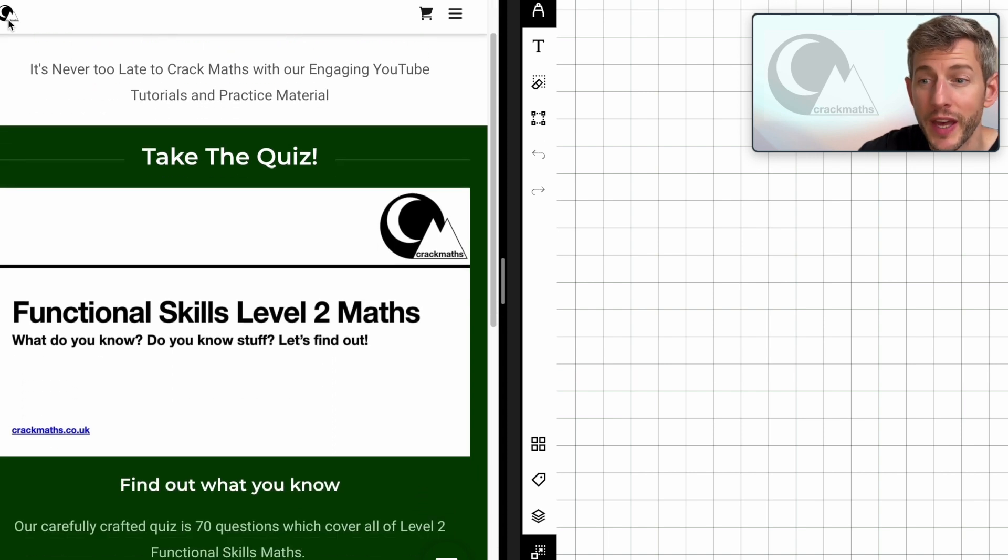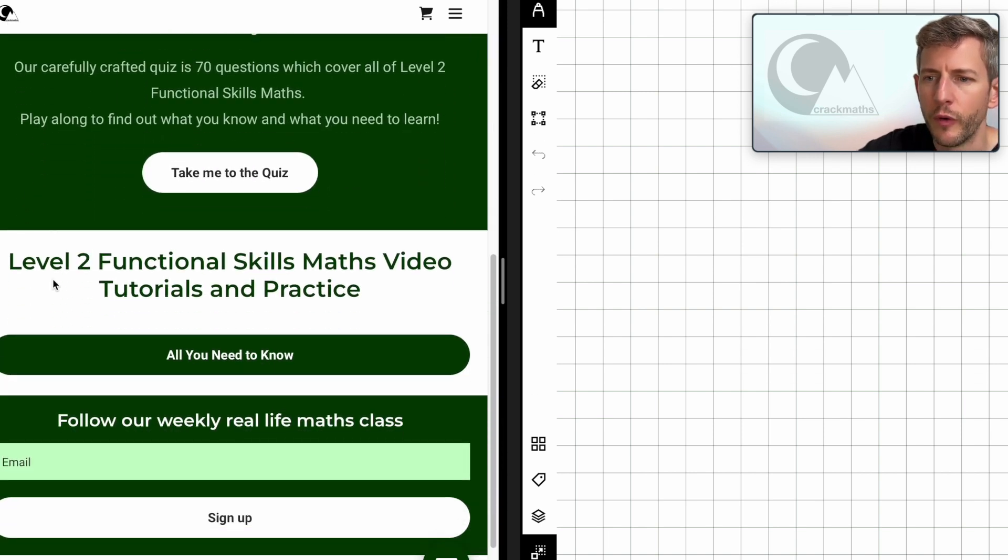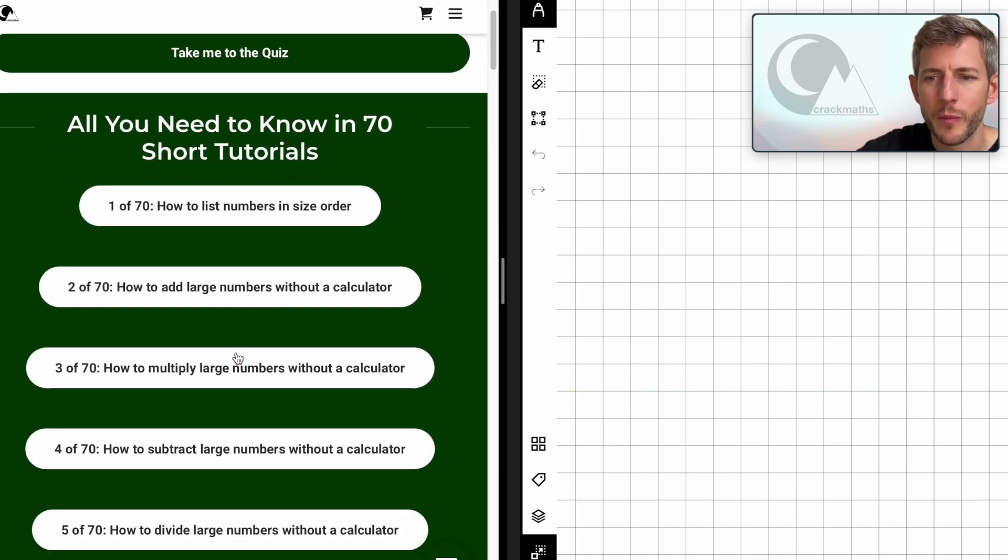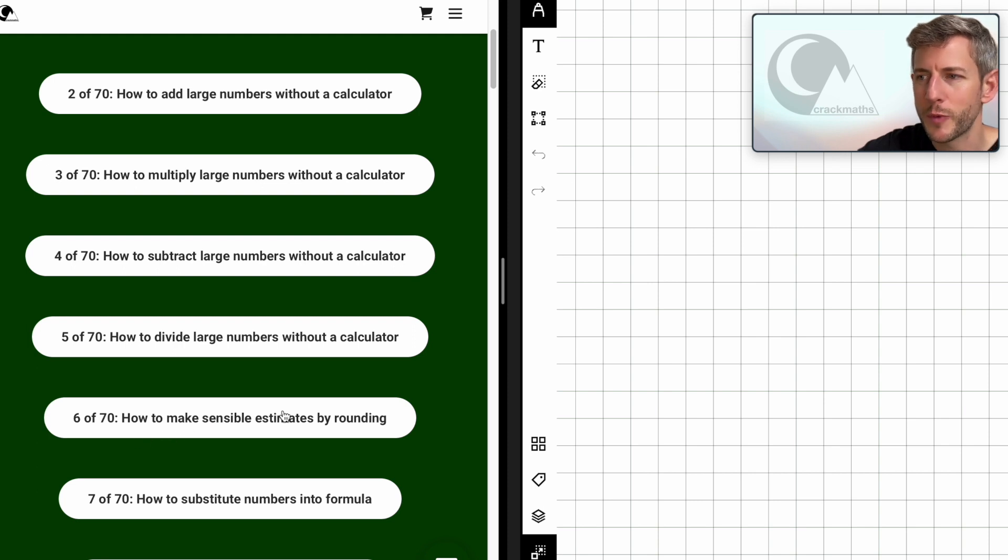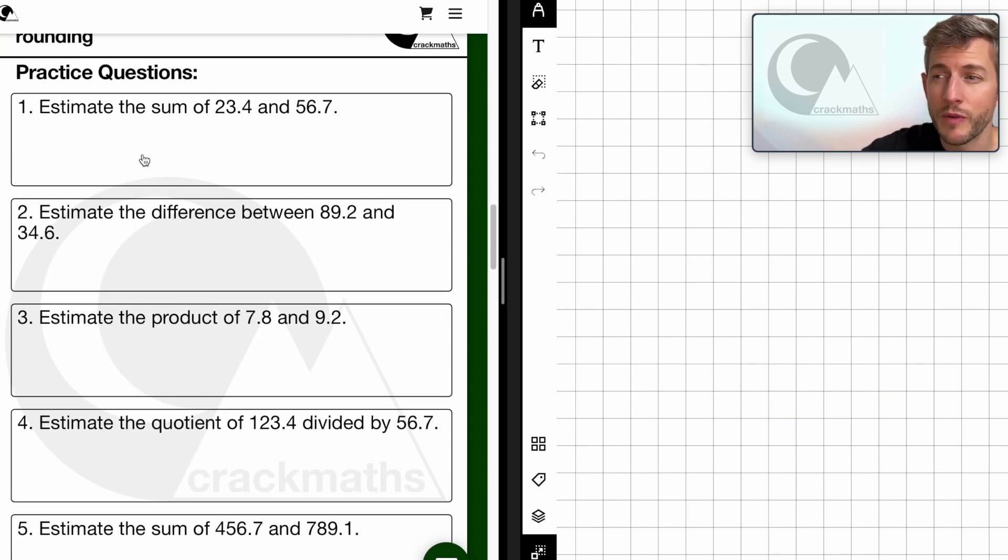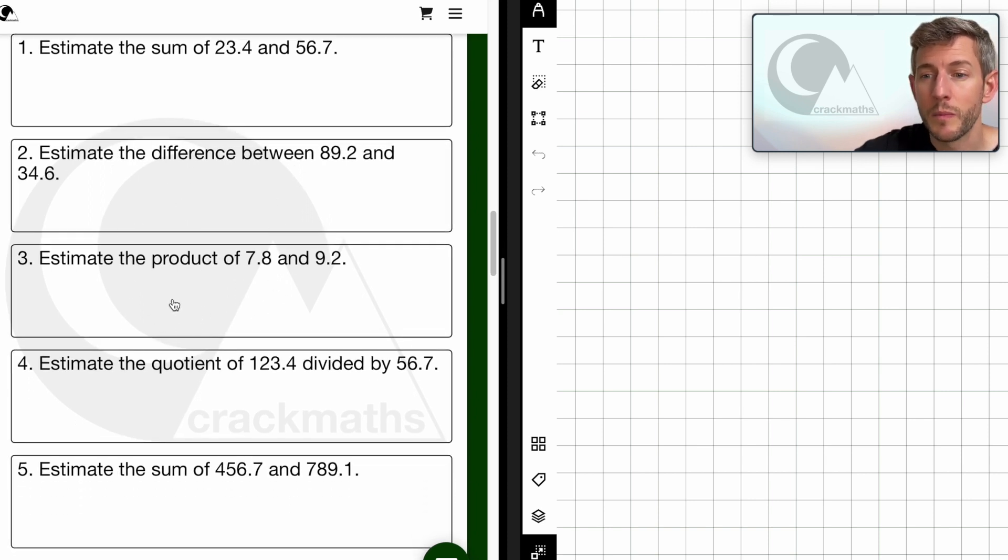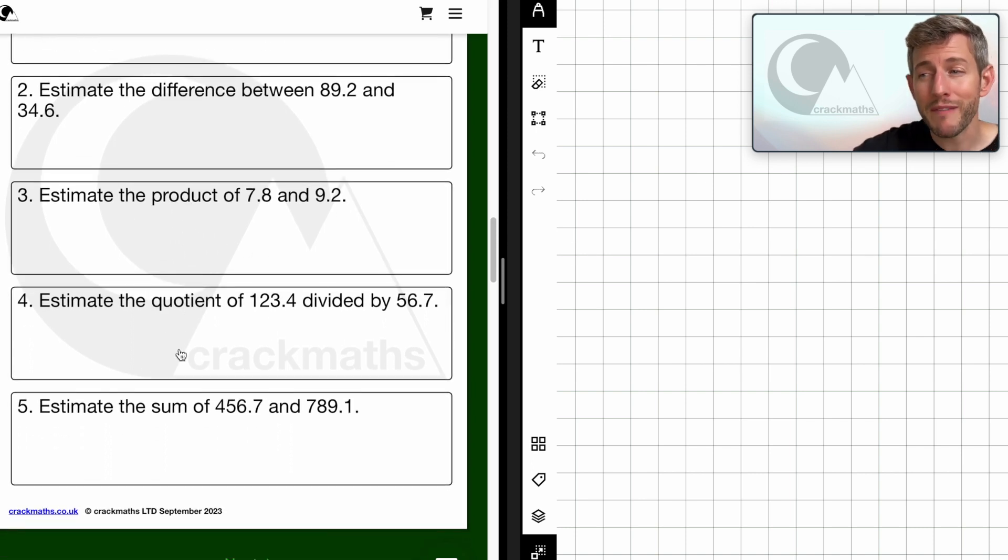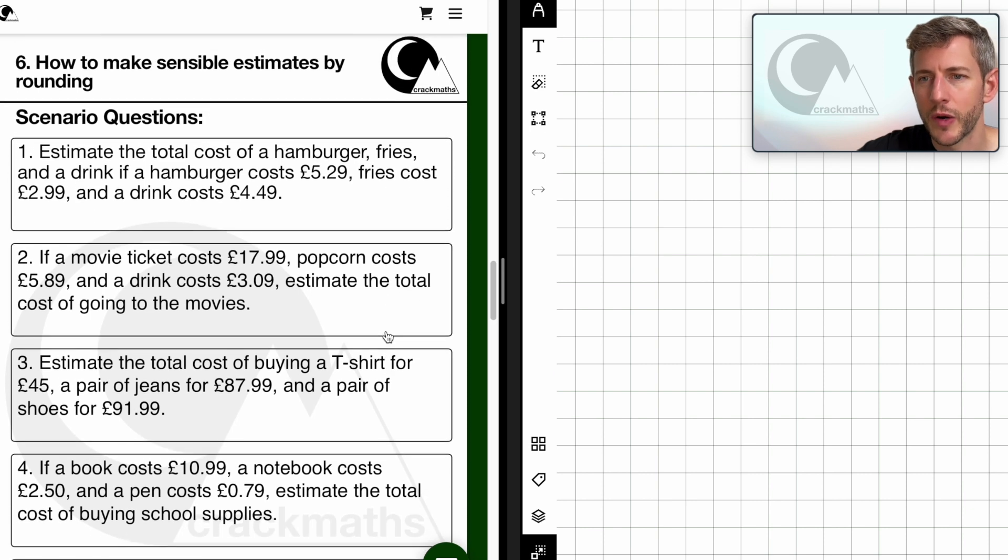So here we are at crackmaths.co.uk. Let's scroll down here to look for all you need to know. So we click on all you need to know and then we can scroll down to number 6, how to make sensible estimates by rounding. Here's the practice questions. Remember some of these words that we've learned so far. Sum means to add, so estimate the sum means to add. Estimate the difference means to subtract. Estimate the product means to multiply. And estimate the quotient, we haven't actually talked about this word quotient. It rarely comes up, to be honest. But the quotient is just the result of dividing one number by another. So if we were dividing these numbers, this would be 123.4 divided by 56.7.